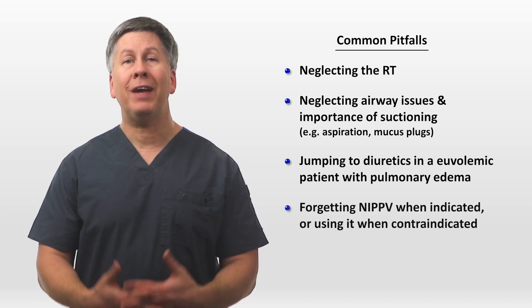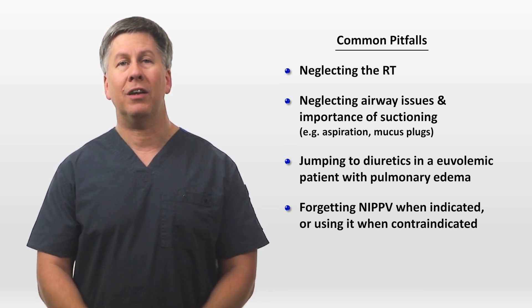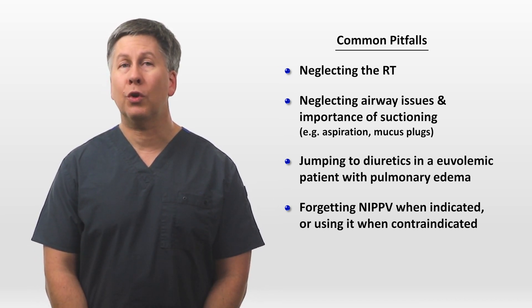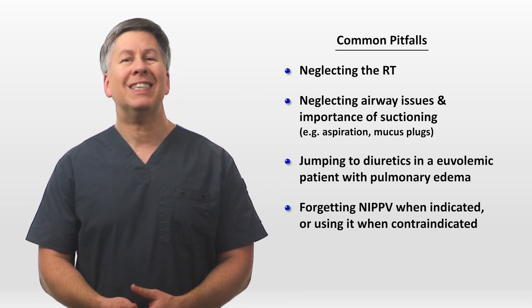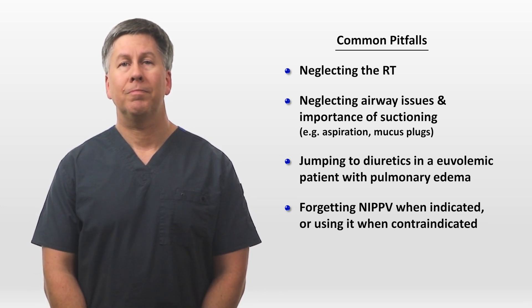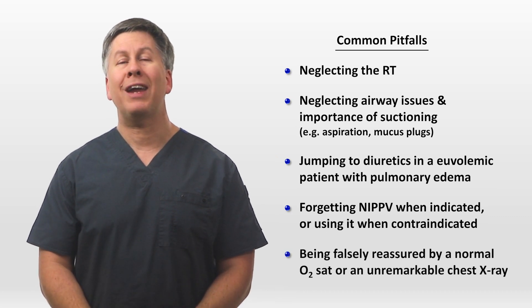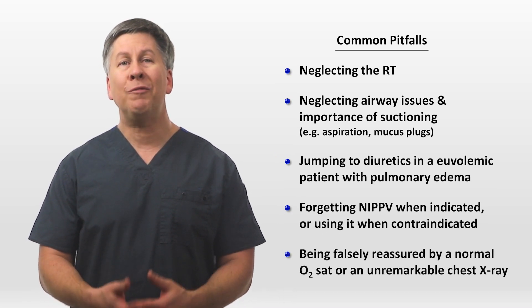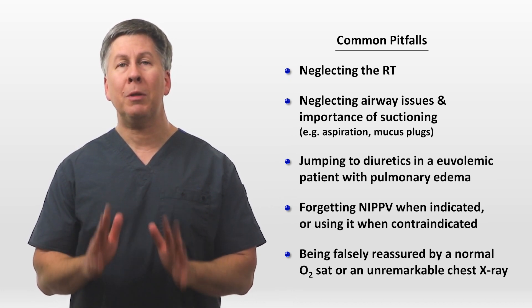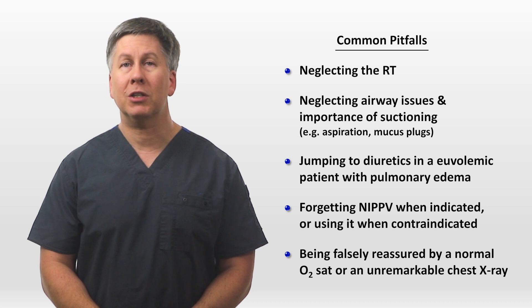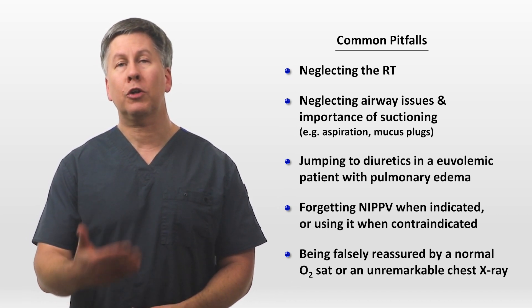Don't forget the option of noninvasive positive pressure, but also don't rely on it when it's contraindicated — such as when the patient is difficult to arouse, is vomiting, or agitated, or when the suspected diagnosis is not something expected to turn around within hours. And last, be careful not to be falsely reassured by either a normal O2 sat or an unremarkable chest x-ray. All of the conditions mentioned in this video can become symptomatic before hypoxemia starts, and the radiographic findings of most can lag behind the rest of the clinical picture by hours.